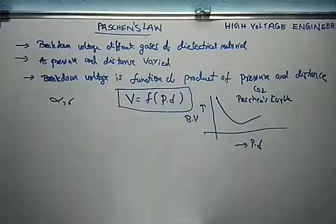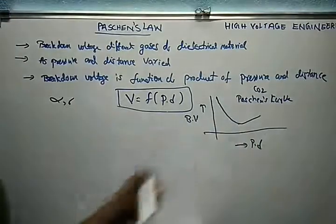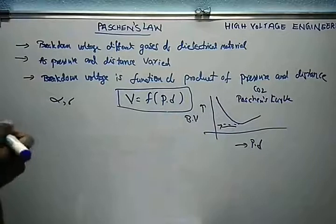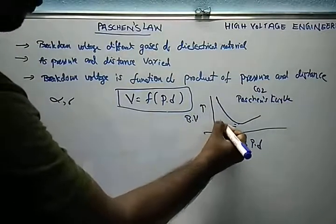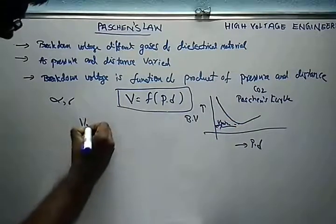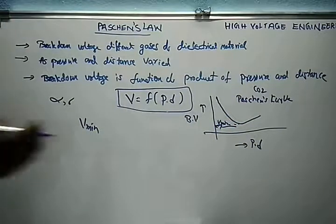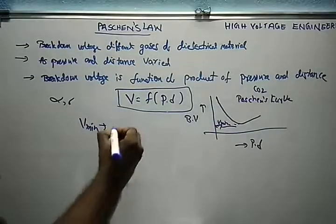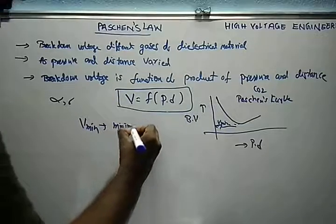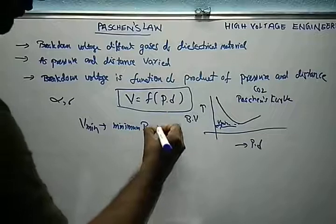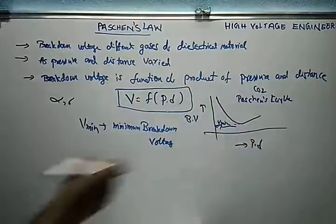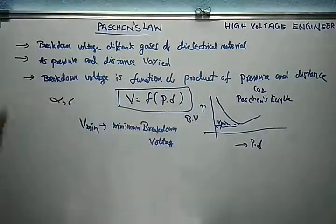Looking at the curve — wherever it approaches the y-axis, that voltage is called the minimum voltage. That is the minimum breakdown voltage value. This is about the Paschen's curve.